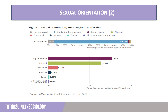Breaking this down, just 1.5% of the population identified as either gay or lesbian, with a further 1.28% identifying as bisexual. Other sexual orientations included pansexual at 0.23%, asexual at 0.06%, and queer at 0.03%. All other sexual orientations were recorded as 0.02% of the population of England and Wales over the age of 16.